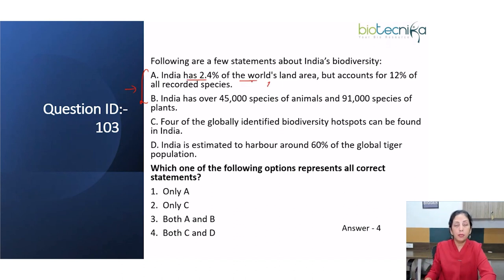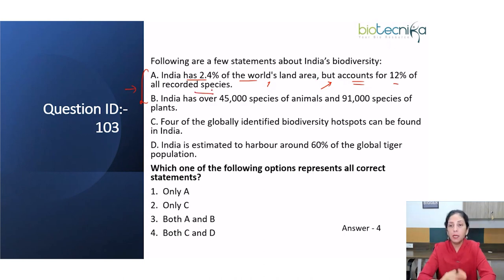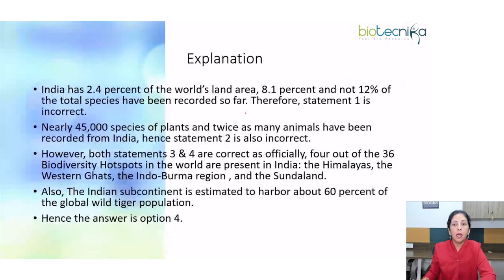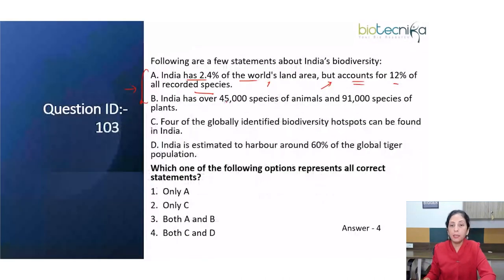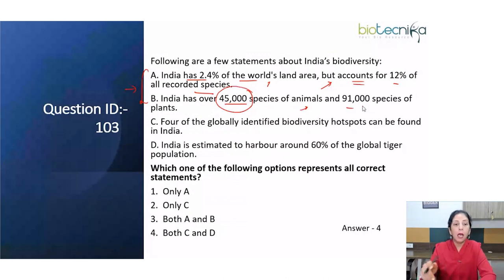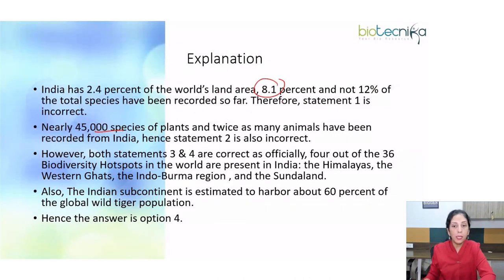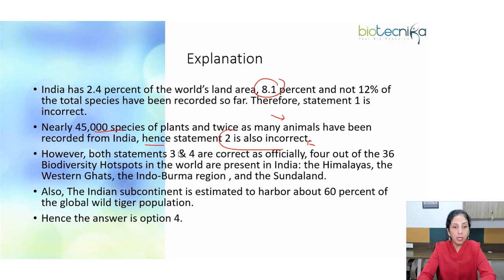In statement A, it is given that India has 2.4 percent of the world's land area — which is absolutely true — but it also states that it accounts for 12 percent of all recorded species, which is not right. India accounts for 8.1 percent of total species recorded so far, so statement A is incorrect. Statement B states that 45,000 species of animals and 91,000 species of plants are in India. However, the correct figures are 45,000 species of plants and twice as many animals, so statement B is also incorrect.